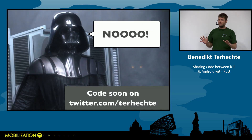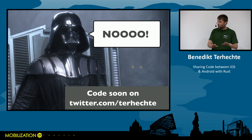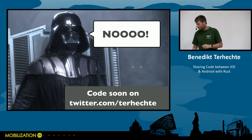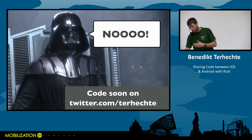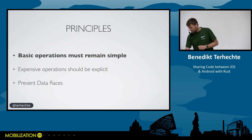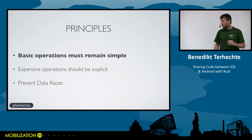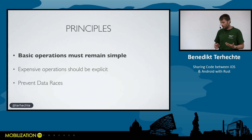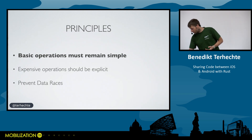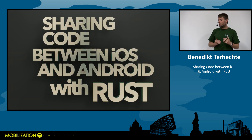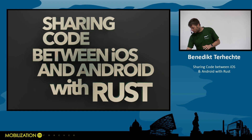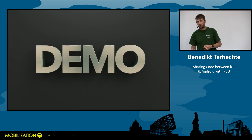If you're a Swift or Kotlin fan and think the benchmarks are wrong, I'll release the code so you can look yourself and create a pull request — I'd be very happy for it. We saw the first principle in action: basic operations must remain simple. Most of what we saw was basic code, and it looked the same in all three languages. Now let's go back to our main topic — sharing code between iOS and Android with Rust — and do a demo.